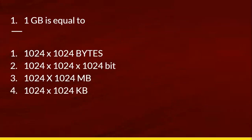First one: 1 GB is equal to some format. This is actually a 2019 format chart for us. 1024 bytes are the data. 1024 bytes equal to 1 KB. 1 KB into 1024 equals 1 MB.